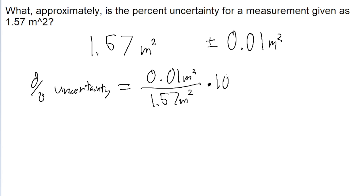And then of course you multiply by a hundred to actually convert it into a percent. And if you put this into a calculator, then you find a percent uncertainty of about 0.637%.